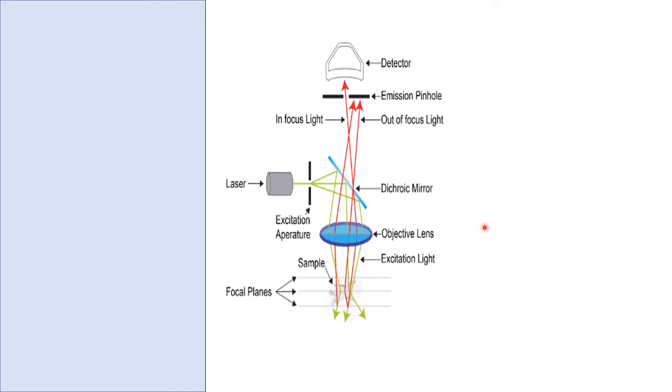Let's talk about the light path first. The light path of one photon confocal microscopy consists of: